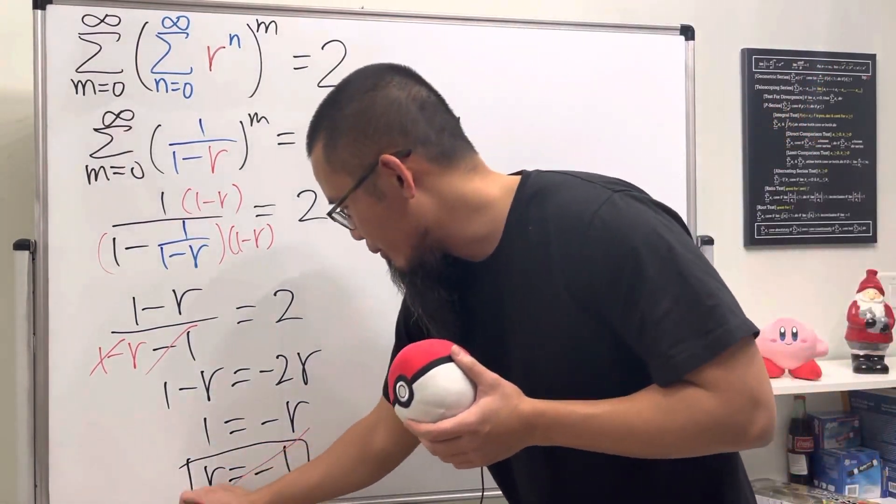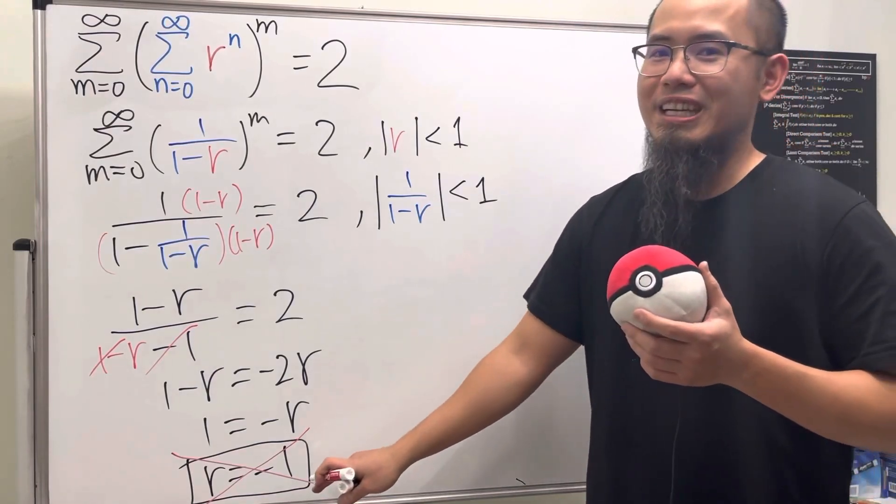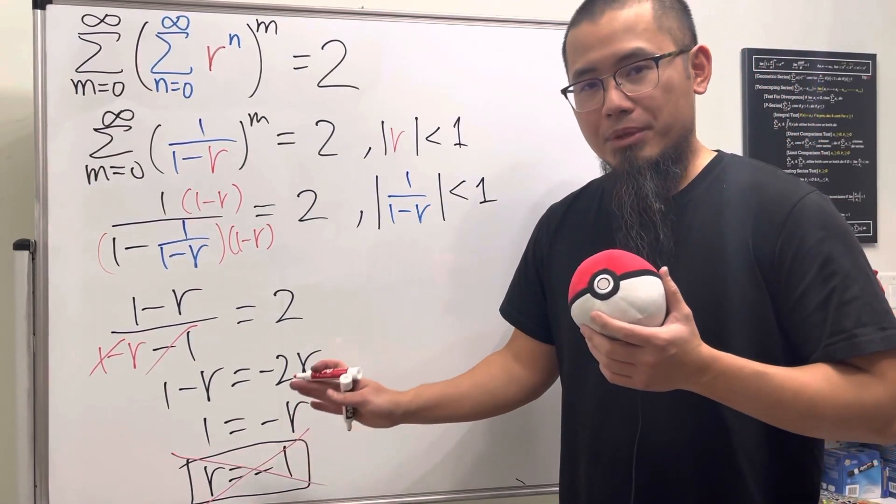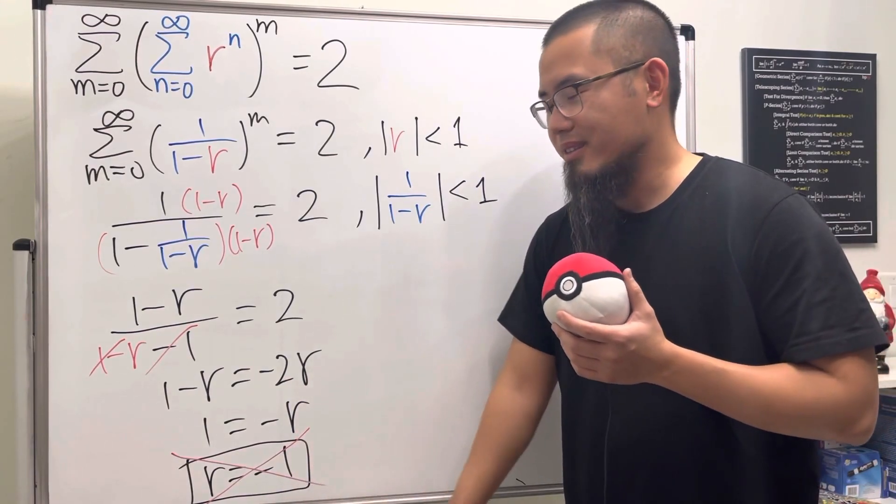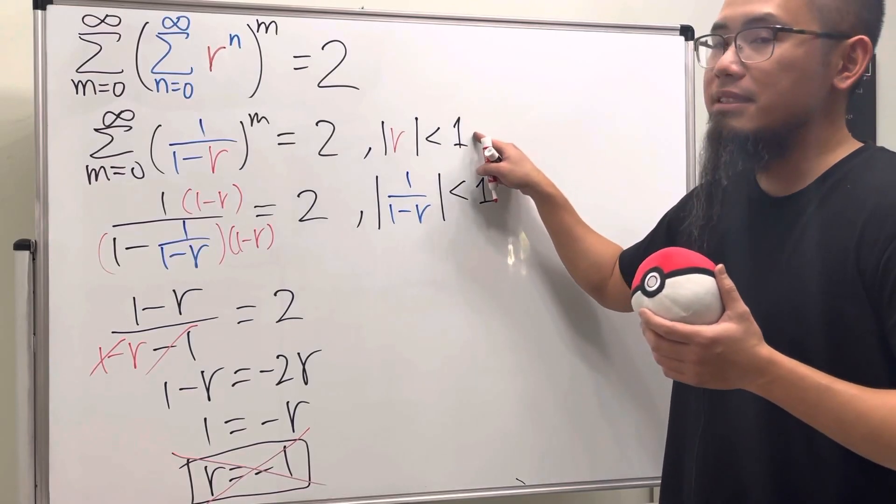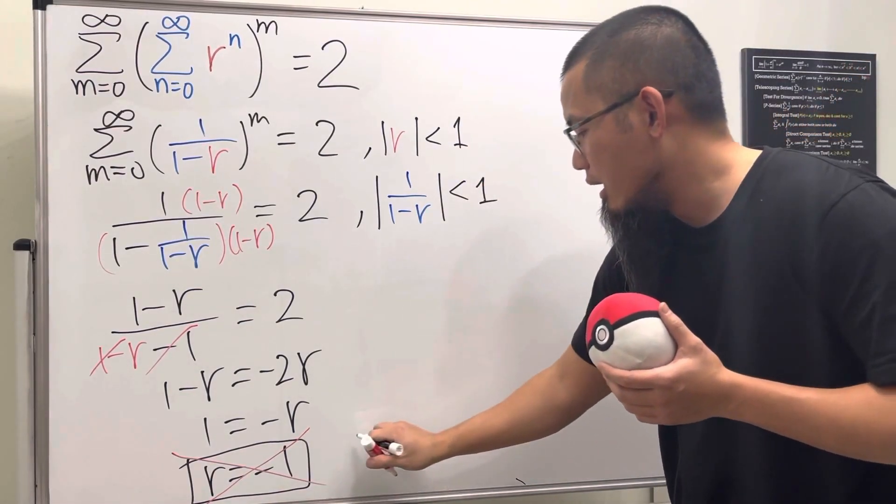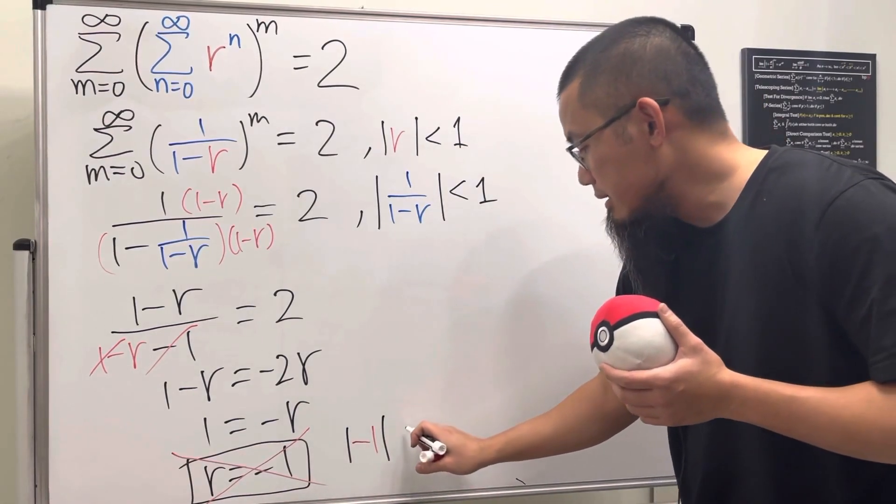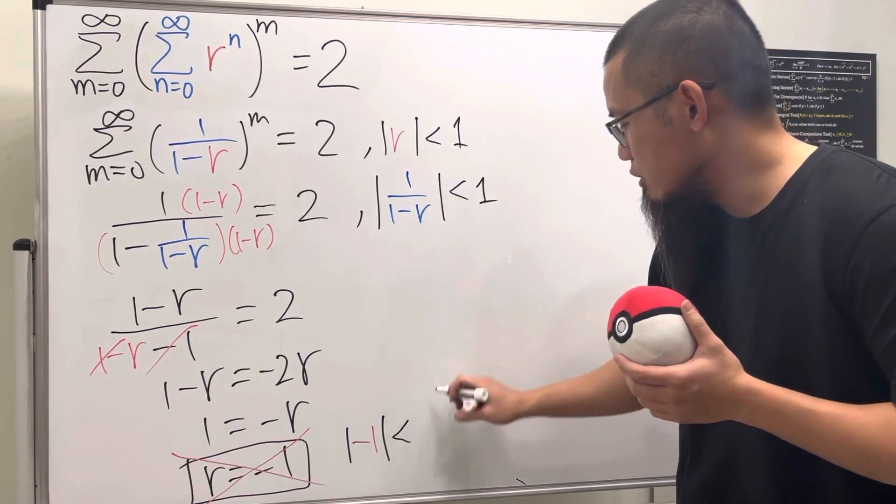But no, no, no, no, no, no, no. This is not correct. This is just a fake answer. We cannot be too happy about that because now, this is the technical detail, this negative one does not even satisfy this inequality. Check this out: absolute value of negative one, which is one, we're saying it has to be less than one, but this is not true.